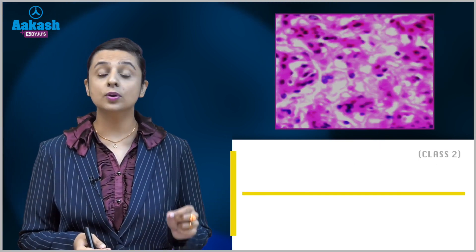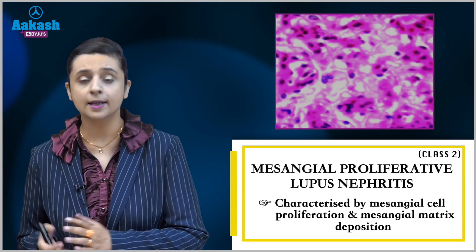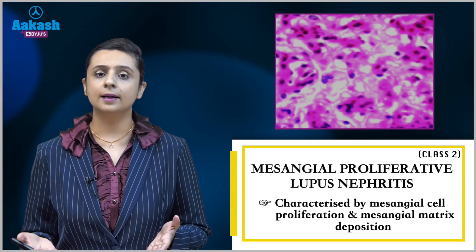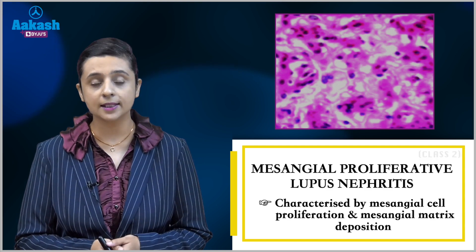Class 2 is mesangial proliferative lupus nephritis, characterized by mesangial hypercellularity.